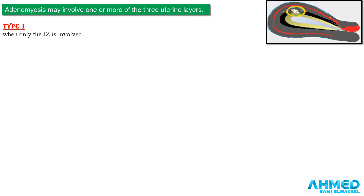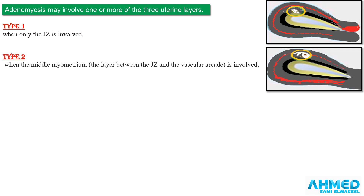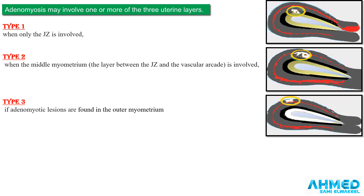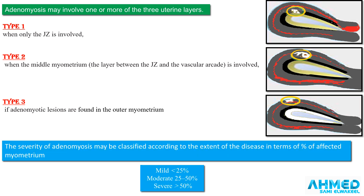Adenomyosis may involve one or more of the three uterine layers. Type 1: when only the junction zone is involved. Type 2: when the middle myometrium — the layer between the junction zone and the vascular arcade — is involved. Type 3: when adenomyotic lesions are found in the outer myometrium. Severity is classified by percent of affected myometrium: mild is less than 25%, moderate is 25–50%, and severe is more than 50%.